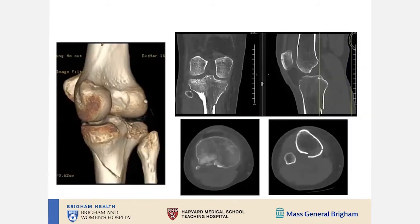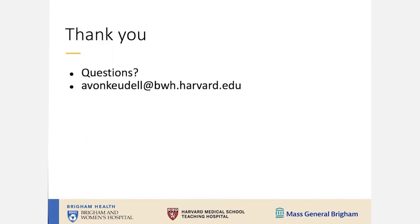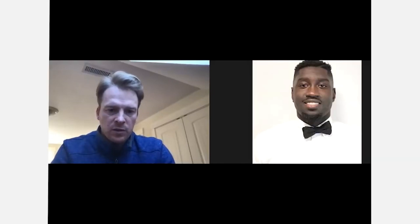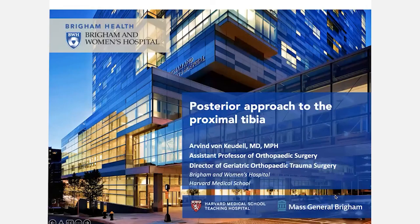Finally, another posterior medial shear fracture to drive home the message: really try to put a plate right at the apex of the fracture on the posterior side. The key question is: at what point do you pull the trigger and go to a posterior approach to the proximal tibia, and which cases really require a straight posterior approach?